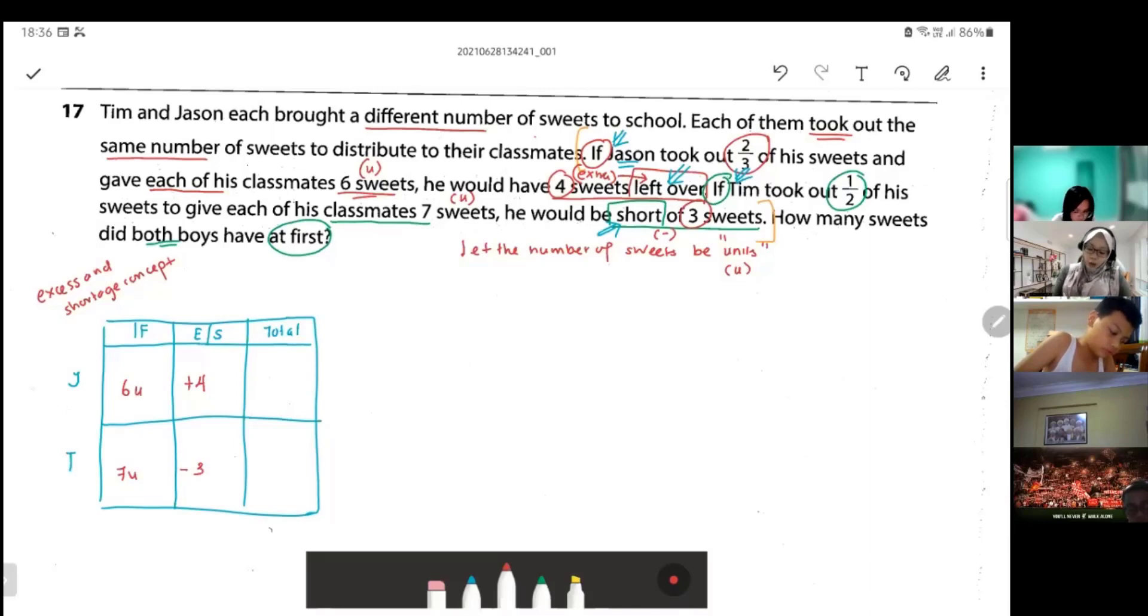Then we look row by row. The top row first, Jason. It will be six unit plus four. Tim, the bottom one, will be seven unit minus three. Now logically, you know that these two boys will have the same number of sweets. But in this case, you know that they brought different number of sweets to school. So I cannot say that Jason and Tim have equal number, it comes from the same group of sweets. I can't do that. We leave it just like that.